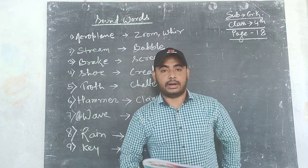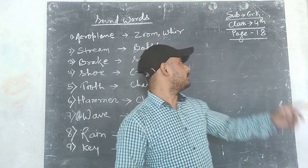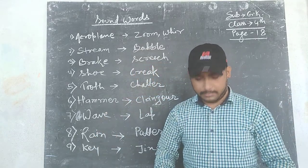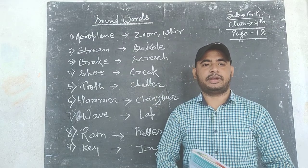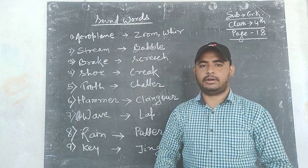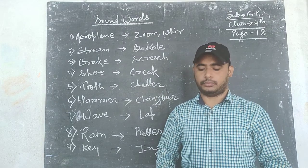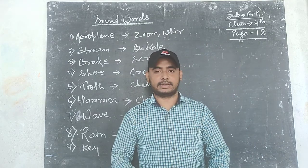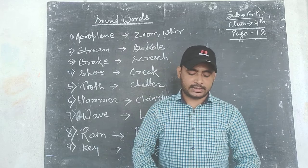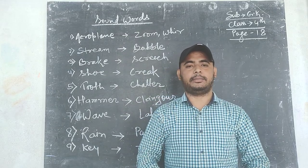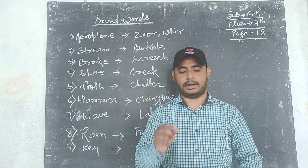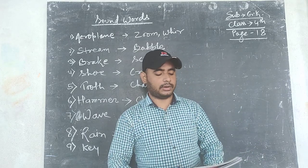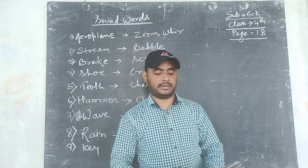Good morning everyone. This video is for the students of Class 4 and we are studying the GK subject. Page number 18 — the name of the chapter is 'Sound Words.' Every sound can have a special name, and in this chapter we match the sounding words with the name of things given.